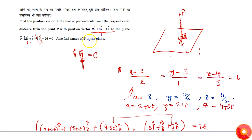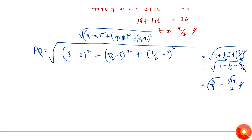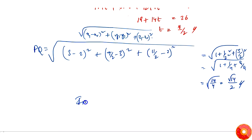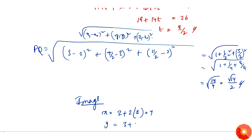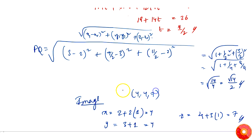Now we find the image of point P in the plane. The foot Q corresponds to t = 1/2. To reach the image, we extend the same distance beyond Q, so we use t = 1 (i.e., 2t = 1). The image coordinates are: x = 2 + 2(1) = 4, y = 3 + 2(1) = 4, z = 4 + 3(1) = 7. Therefore the image of point P is (4, 4, 7).